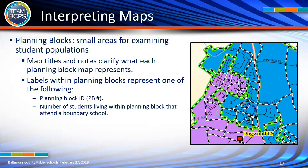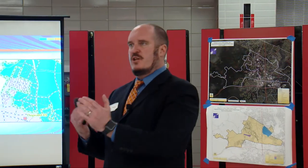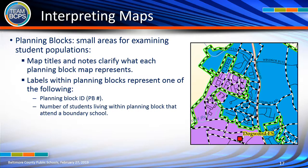When you look at maps, you'll notice black and white dashed outlines — these are what we call planning blocks. We take the elementary areas and break them up into small building blocks, like pieces of a puzzle. The committee moves these planning blocks to one school or the other. Labels on the map indicate the planning block ID number and the number of students that live inside each block. This helps you understand: if I move this area one way or the other, this is how many students go with it.